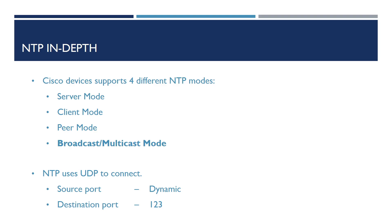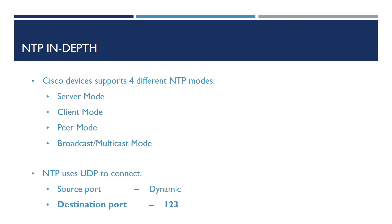And broadcast and multicast mode, allowing us to use multicast and broadcast traffic between our devices to keep times in sync. Finally, NTP uses UDP to communicate. The source port it uses is dynamic and random each time; however, the destination port used is UDP port 123.